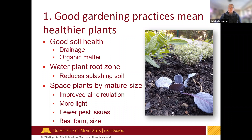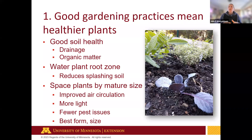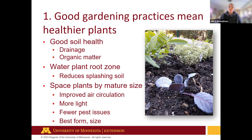Space plants by their mature size — not the size they come in a one-gallon container, but how big they'll be when full grown. This improves air circulation and light to branches, reducing humidity within the plant canopy. Better airflow and light reduces pest issues, since pests like shady, humid areas. We want the plant's natural form to be its best, so give spreading plants enough room to truly spread and achieve their natural form and size.